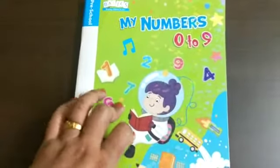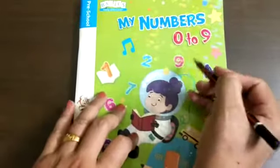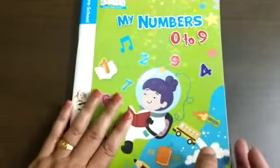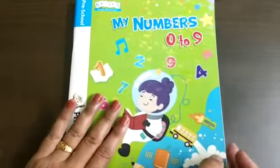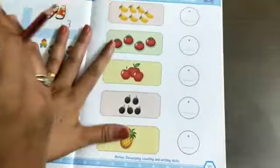Good morning students, today we are going to work from My Numbers 0 to 9. This is your maths book, My Numbers 0 to 9. Open this book and go to page number 35.